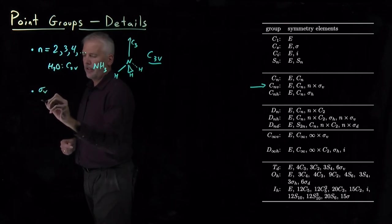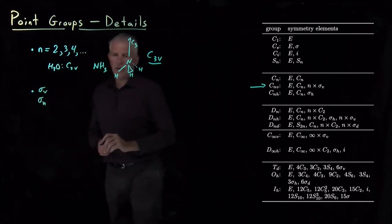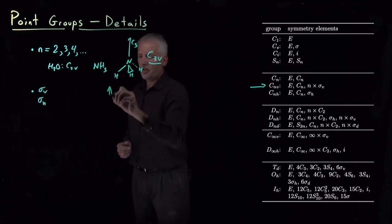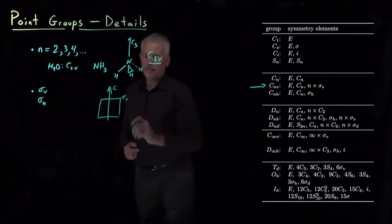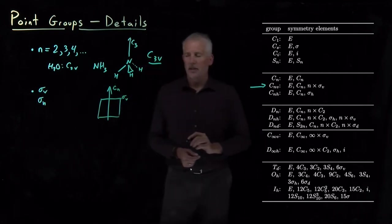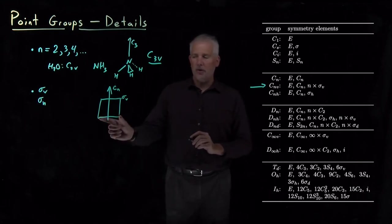We've already been using this terminology of sigma V and sigma H for vertical and horizontal planes. If there's a rotational axis and the plane is aligned with the axis, contains that rotational axis, some CN axis in a sigma V plane contains it, that would be a vertical reflection plane.